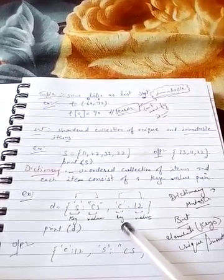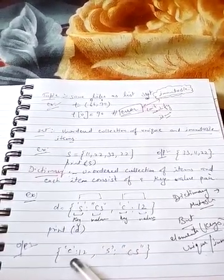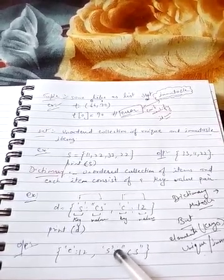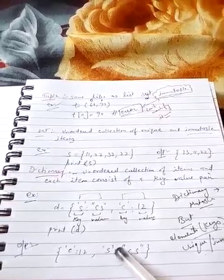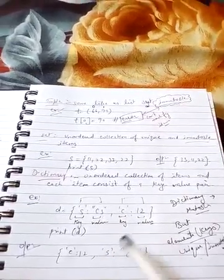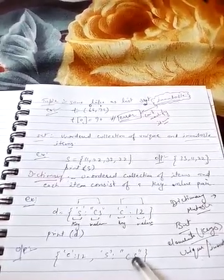So if we print here d, answer can be in this form. C can come here first and s can come here on the second position. But values can't be changed. Value with this key will be printed the same in the order like in this way.